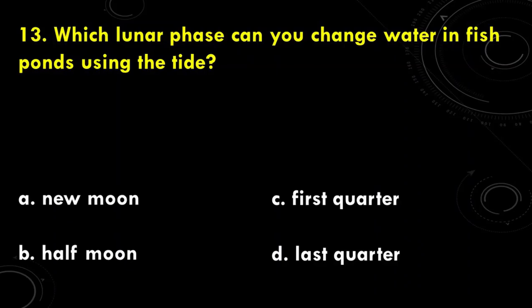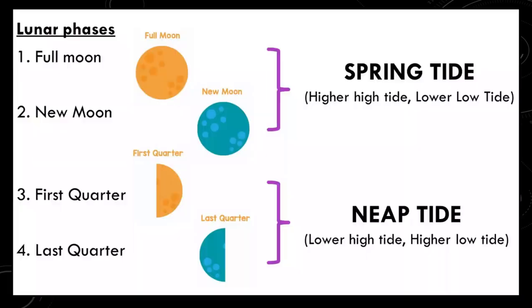Question number 13: which lunar phase can you change water in fishponds using the tide? The correct answer is letter A, during new moon. Water change in ponds is possible during the full and new moons. There are four phases of the moon: the full moon, the new moon, the first quarter, and the last quarter. Both the full moon and new moon cause the spring tide, characterized by higher than usual high tides and lower than usual low tides. Neap tides happen during the first and last quarter, when high tides are lower than usual and low tides are higher than usual.